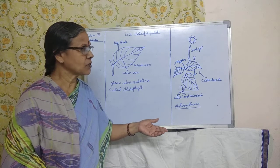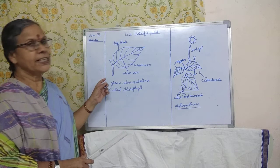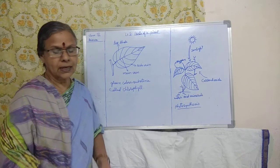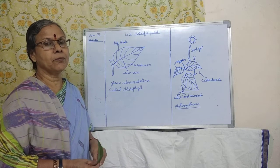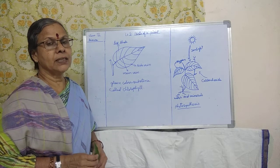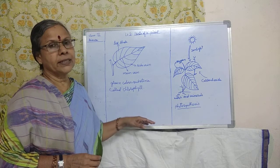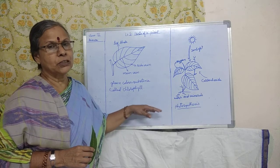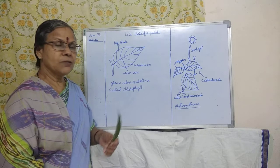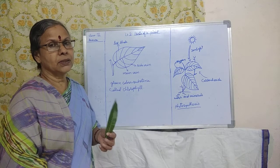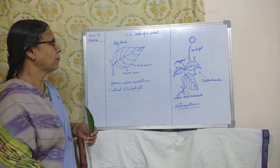Now coming to the next part — the leaf. Leaves are the main part of the plant. If the leaves are not there, then the plant cannot make food. If the roots are not there, then water is not sent up to the leaves. That is why leaves are the main part of the plant.